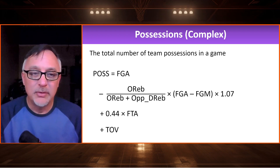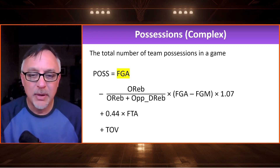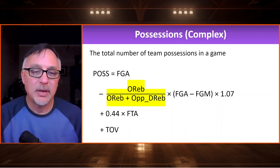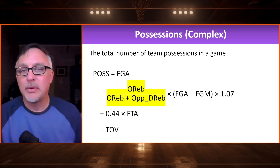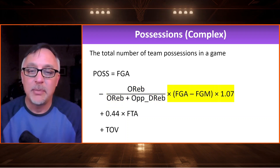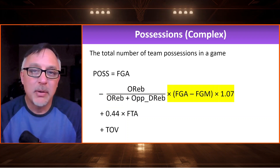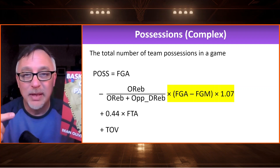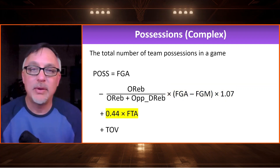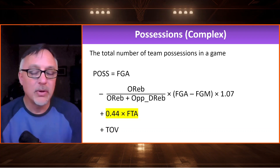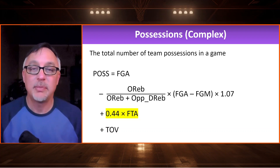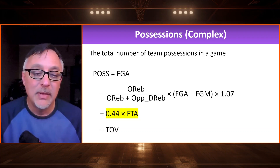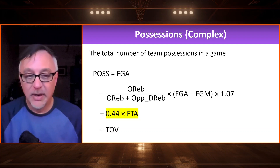Here is the more complicated possessions formula. We start with field goal attempts. Instead of simply subtracting offensive rebounds, we subtract the percentage of offensive rebounds the team got based on the total number of potential rebounds — some of which were defensive rebounds for the opponent — and multiply by the number of misses, then by 1.07. For free throw attempts, we multiply by 0.44. Dean Oliver's book uses 0.4, but when I compared it to actual NBA possessions, 0.44 got me closest. And then finally, we add the number of turnovers.